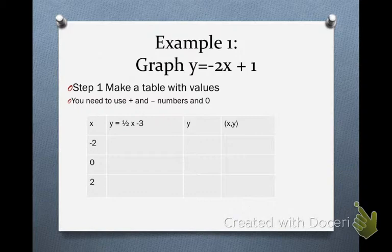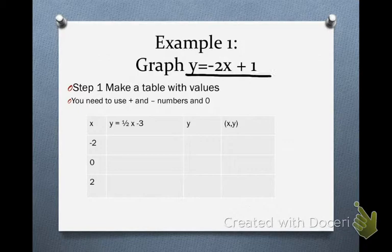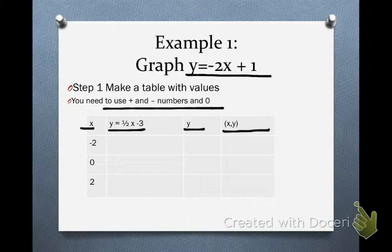Okay, so first step. We want to graph this linear equation, which is y equals negative 2x plus 1. So the first thing you do is you make your table. So here's my x, here's my equation, here's my y, and here's my xy coordinates. Then we need to use positive and negative numbers and a 0. So I've selected negative 2, 0, and positive 2. So that's the first step. Get your table organized.